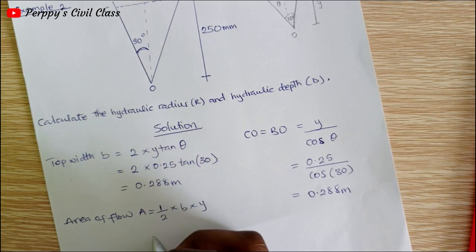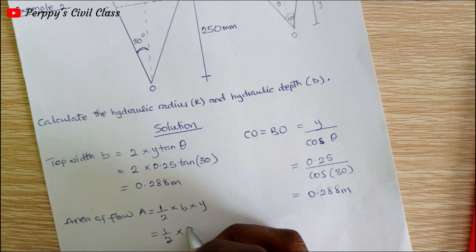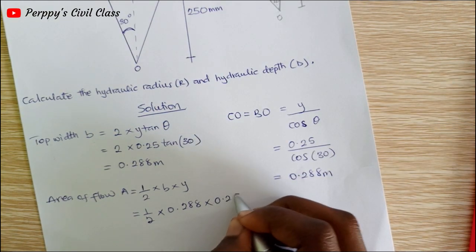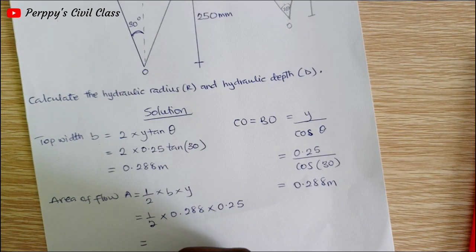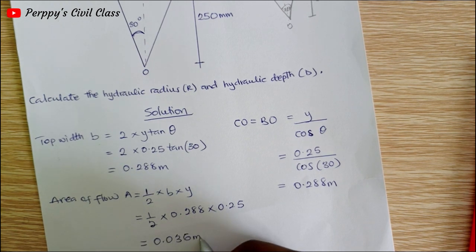We already know our b, therefore half times 0.288 times our y 0.25 is equal to 0.036 meter squared.